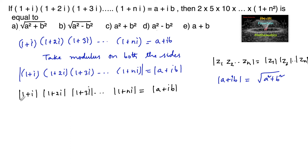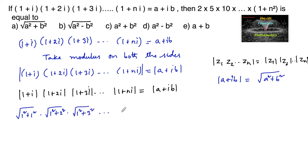So |1+i| = √(1²+1²), times √(1²+2²), times √(1²+3²), and so on times √(1²+n²), which is equal to √(a²+b²).